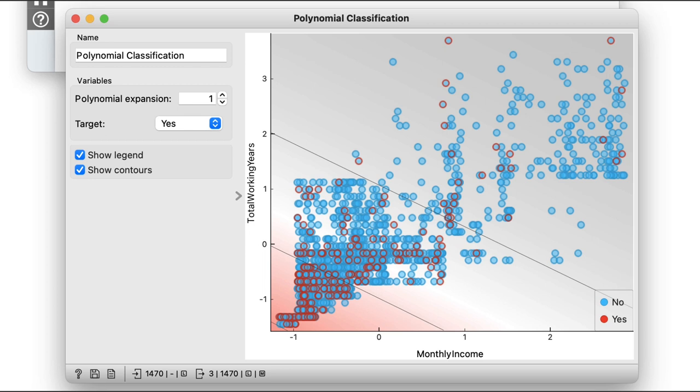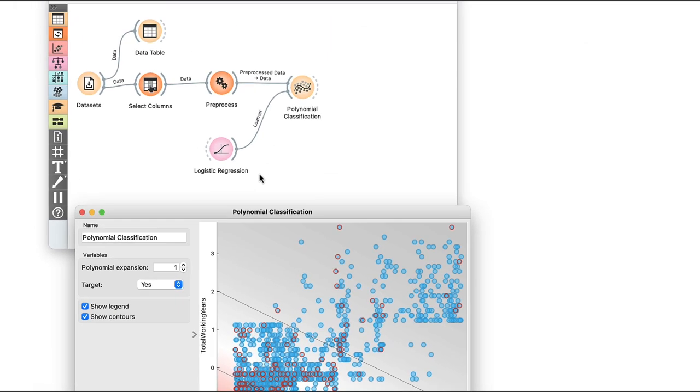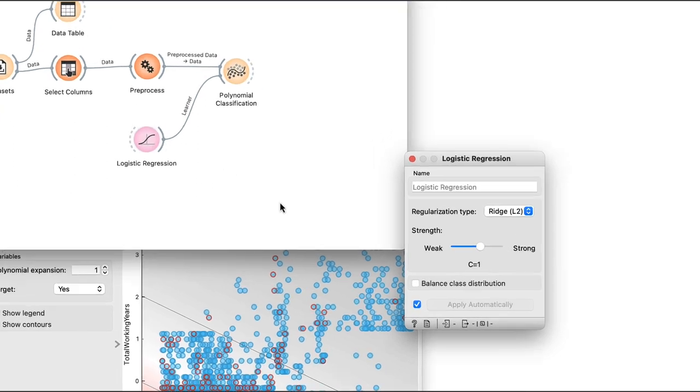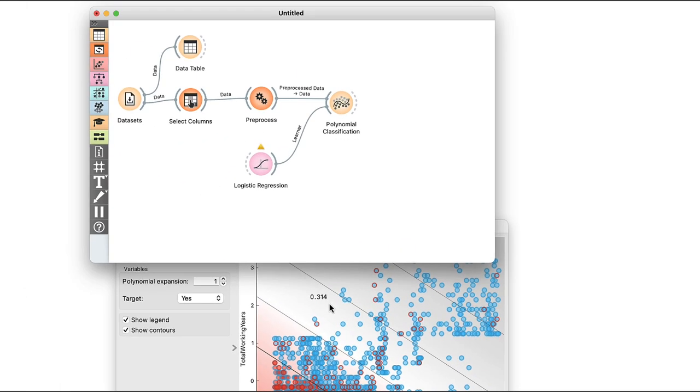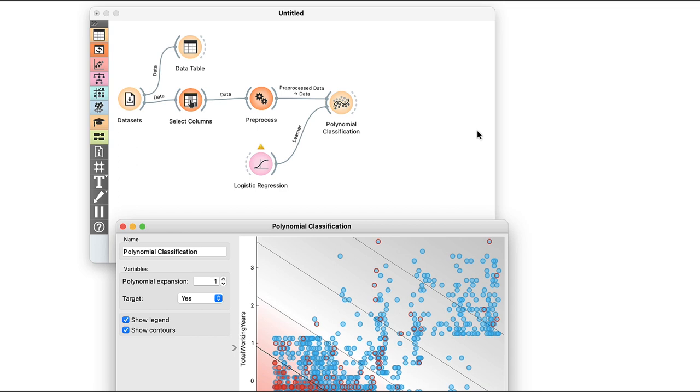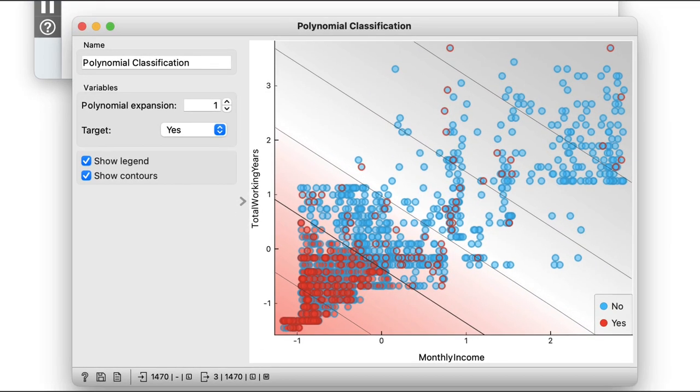Now instead of using the default logistic regression, I can use the one that balances the classes in the data set. This means I want to check the balance class distribution in the logistic regression widget, and send the resulting learner to polynomial classification. Okay, now the bold line representing the classification boundary is where I expected it to be if I drew it by hand.